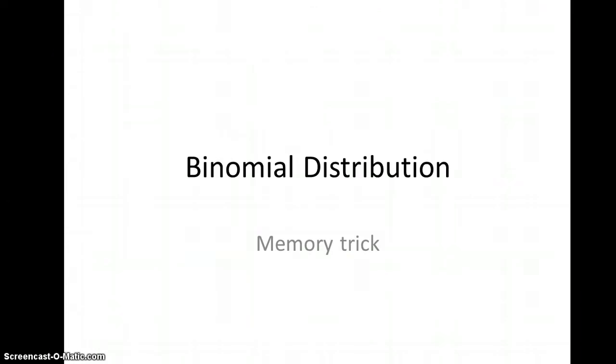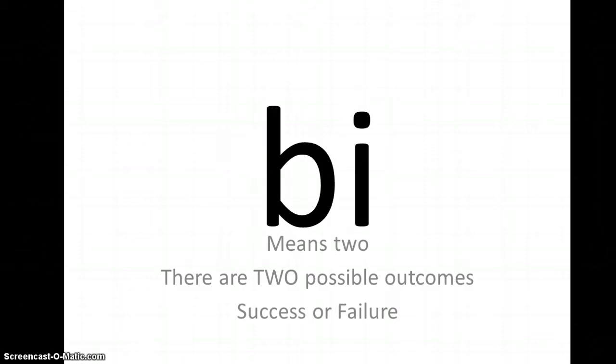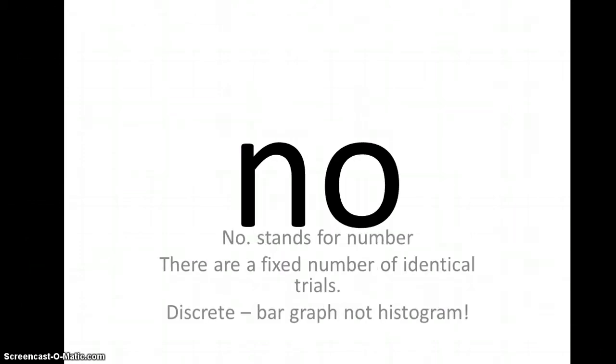Binomial. This is a bit of a memory trick for the binomial. Bi, no, mi, al. Bi means the two possible outcomes, success or failure. No means the number of fixed identical trials. It's discrete. It's a bar graph, not a histogram.